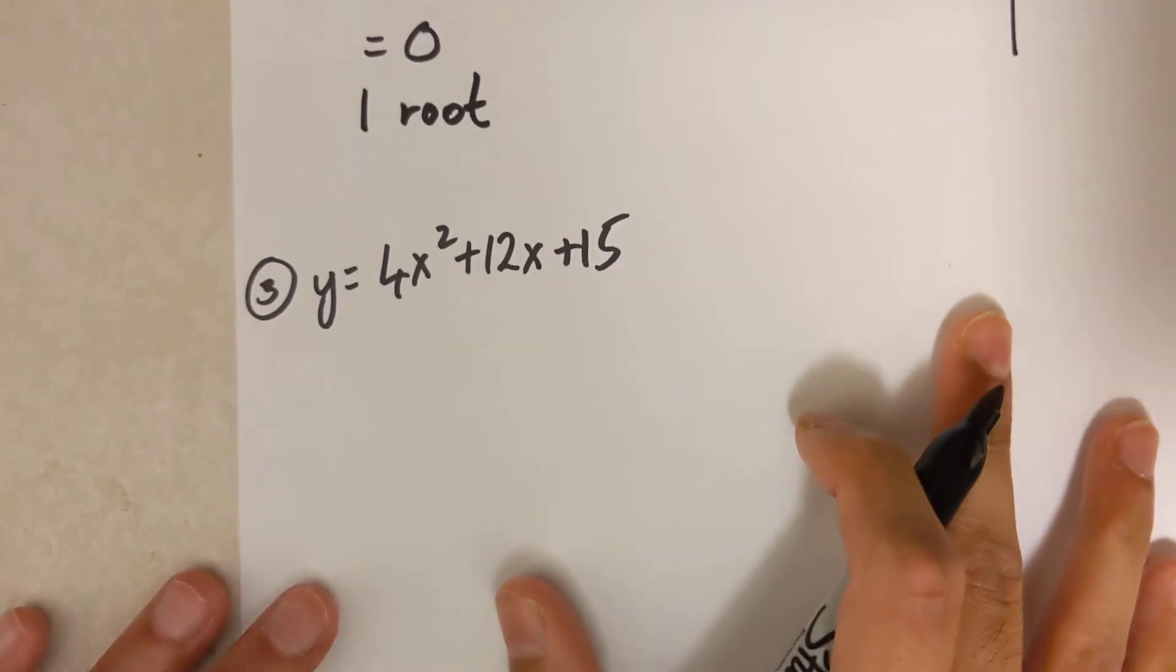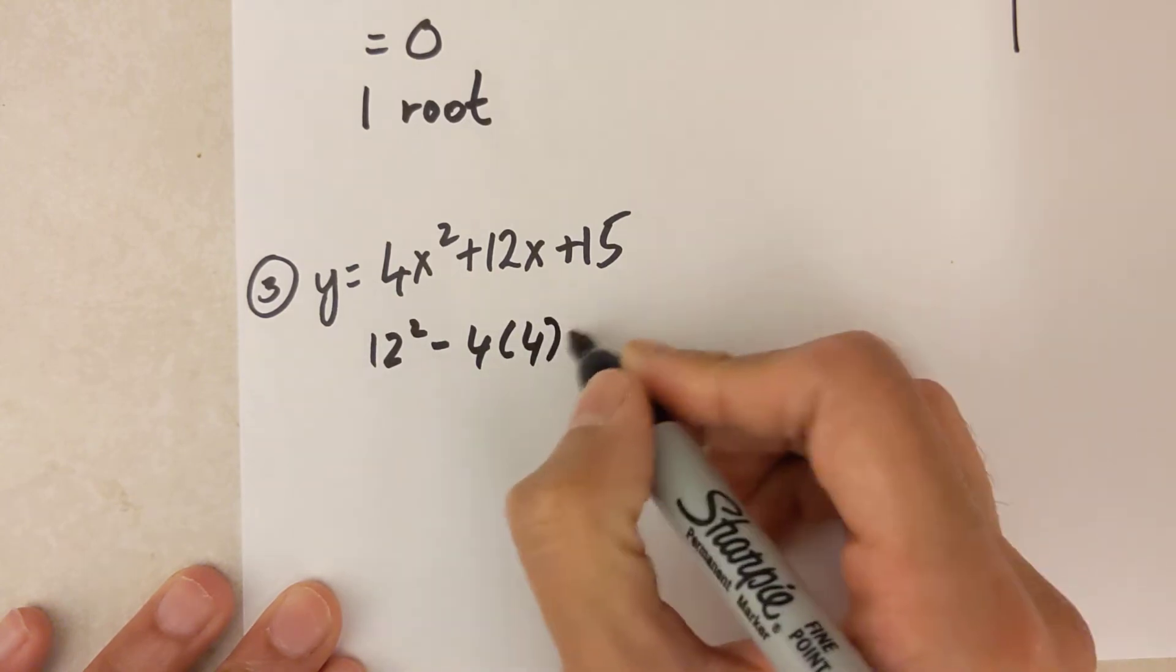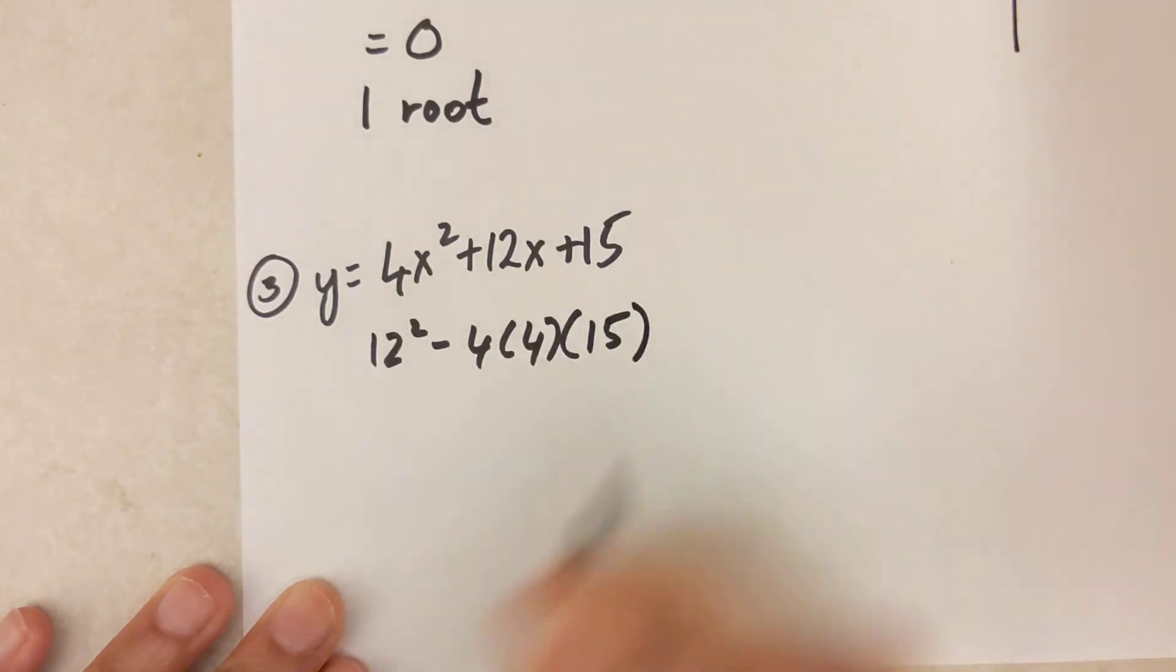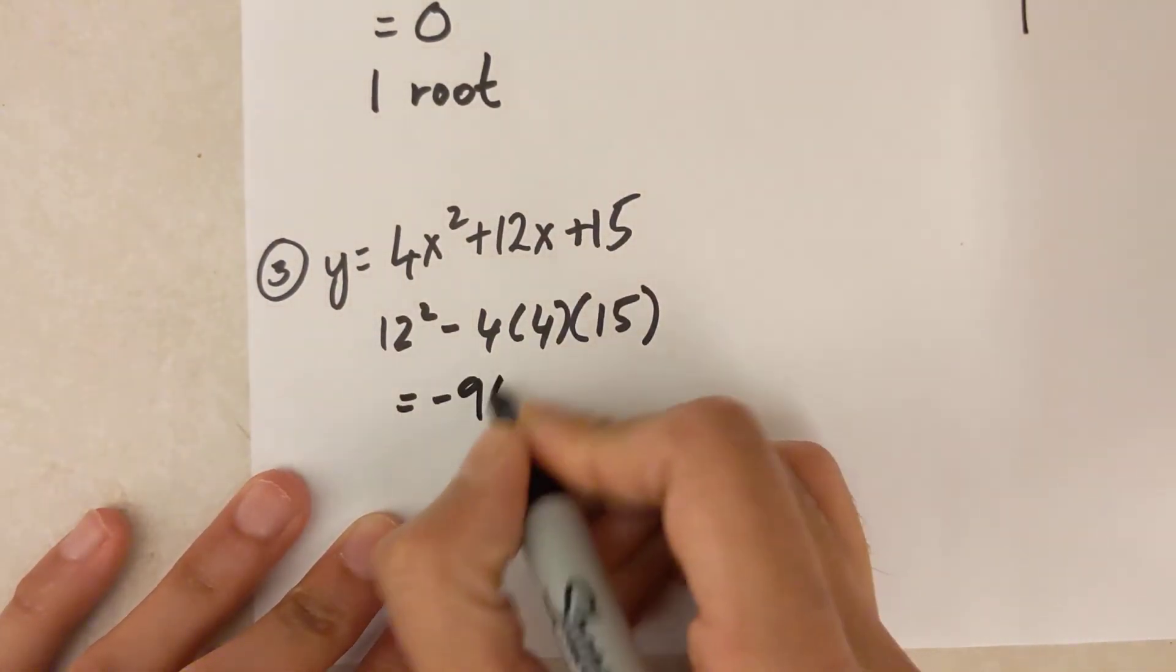Let's try this third one over here. So b² minus 4 times a times c. I'll put that in my calculator. I get negative 96.